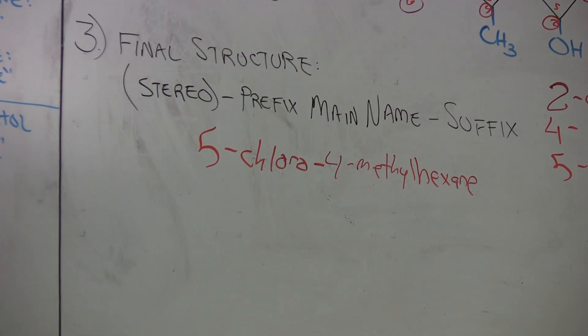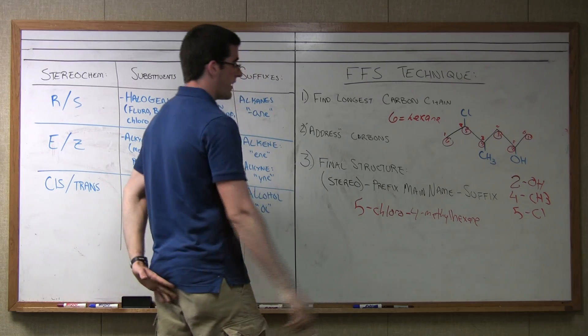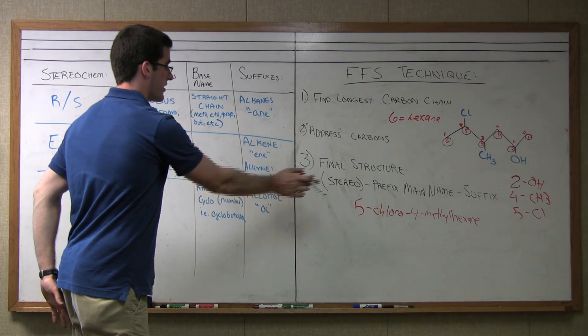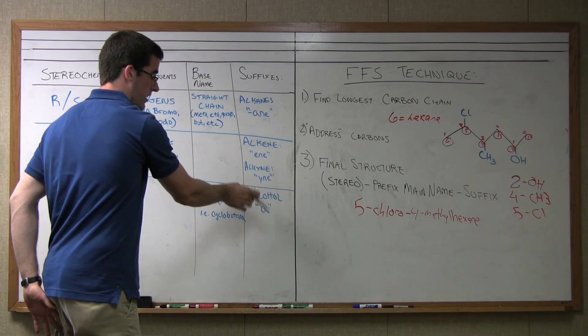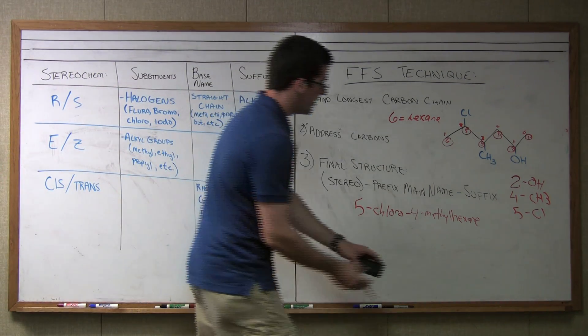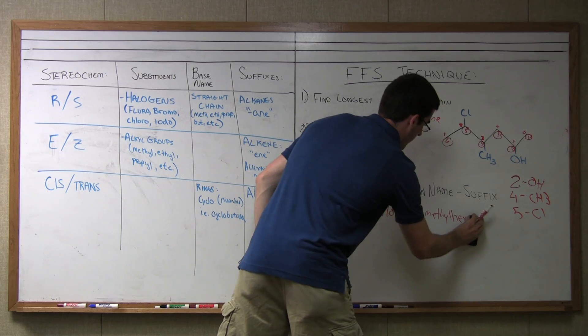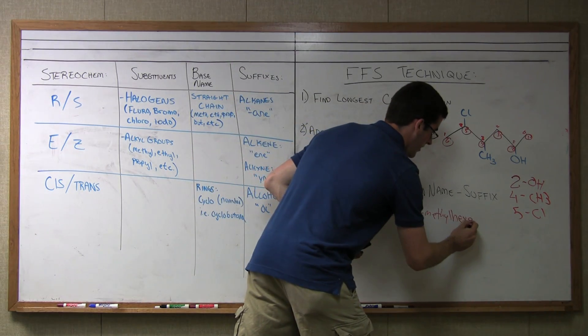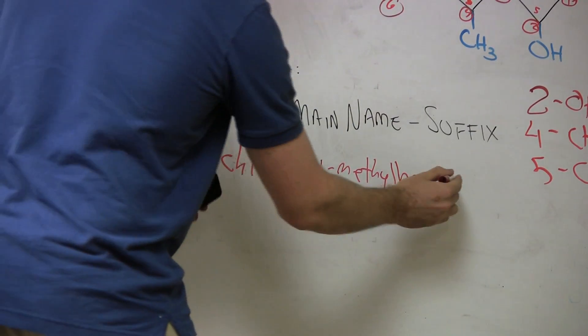Now that I have my main name, I'm going to finish it off with my suffix, which is the alcohol. The suffix, according to this table, changes the ending 'ane' to 'anol' to indicate an alcohol. What I'm actually going to do is alter this to incorporate the alcohol's position. I'm going to put in 'an,'